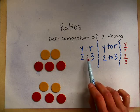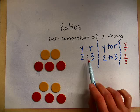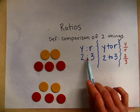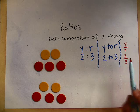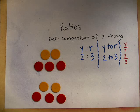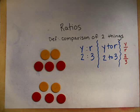In each ratio, the symbol that separates the numbers always says 'to'. So two to three, two to three, and two to three. So that is your basics of ratios.